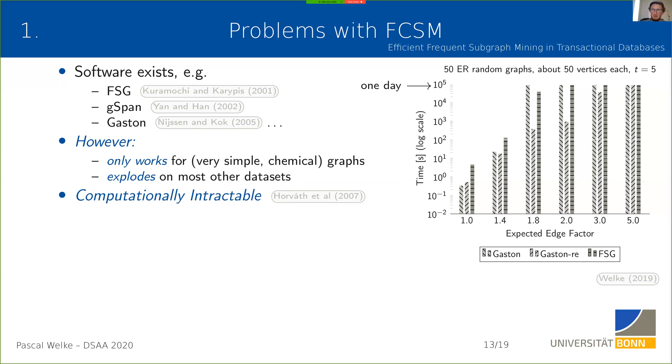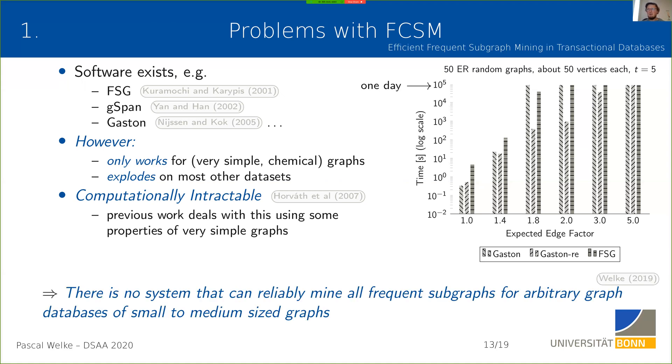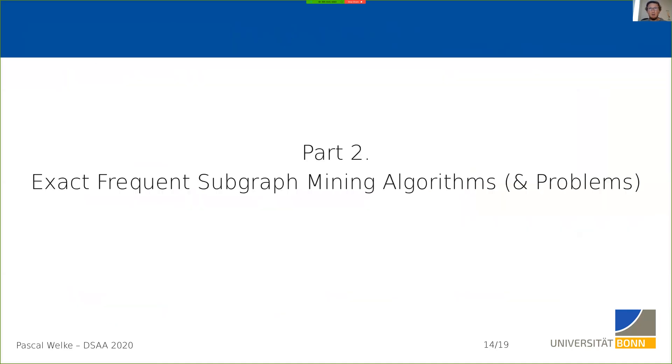The reason is that the frequent connected subgraph mining problem is computationally intractable, which has to do with the intractability of the subgraph isomorphism algorithm. These existing software somehow implicitly use properties of the graph databases, in particular that these graph databases are rather simple. The state of 2010 and also right now in 2020 is that there is no system that can reliably mine all the frequent subgraphs or all the frequent subtrees in arbitrary graph databases of small to medium-sized graphs.